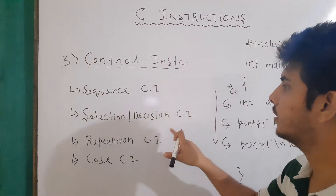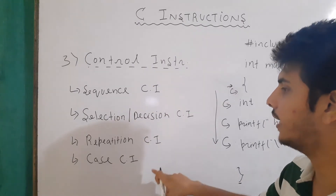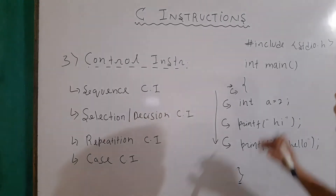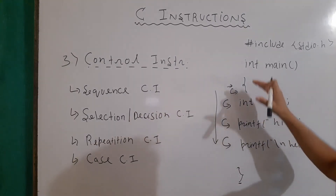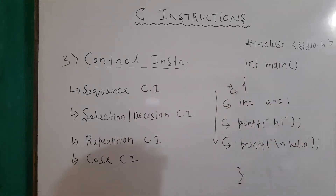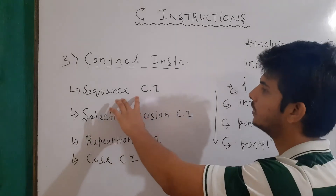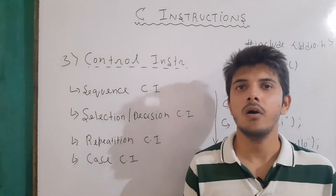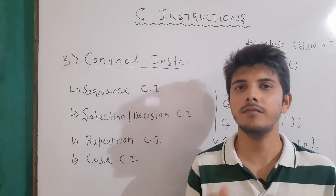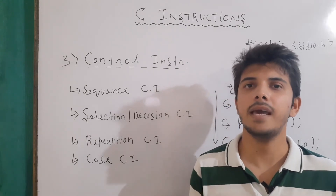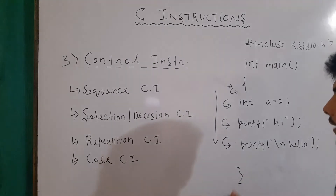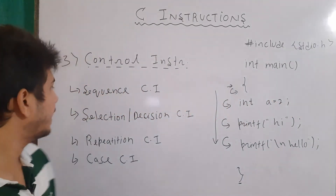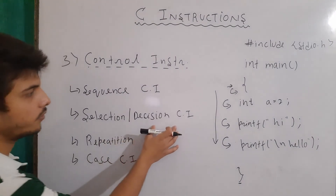Control instructions are of four types: sequence, selection, repetition, and case control instructions. In the example program, the control is going in a sequential way, so this is an example of a sequence control instruction. Sequence control instruction determines or ensures that the execution of our program will be in the same order as written in the program.